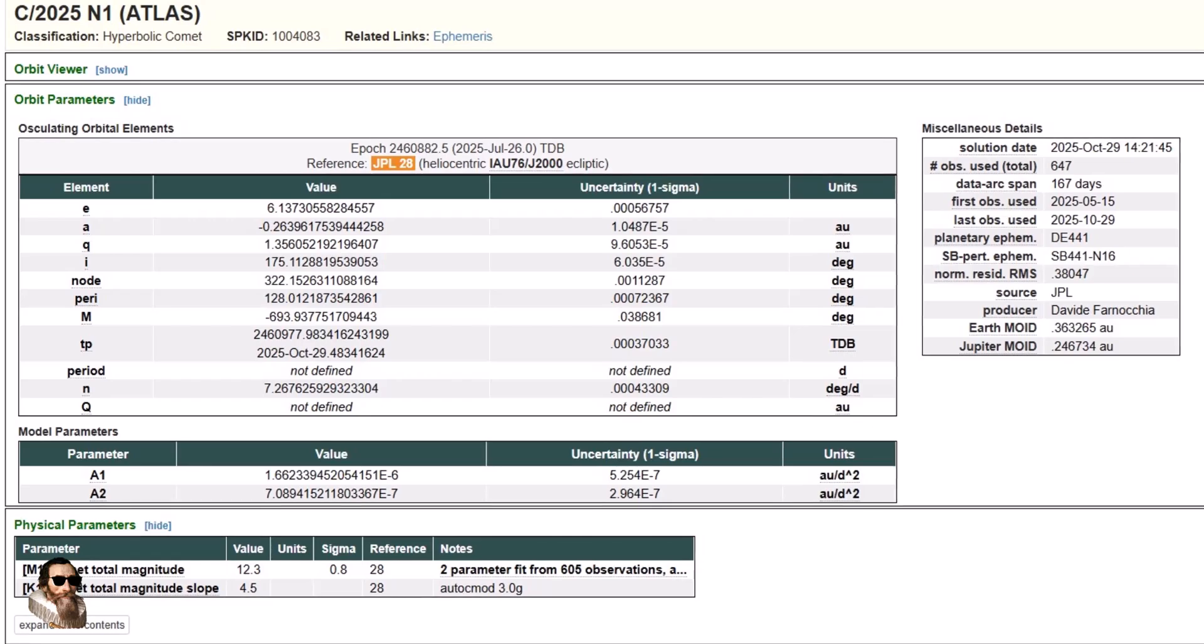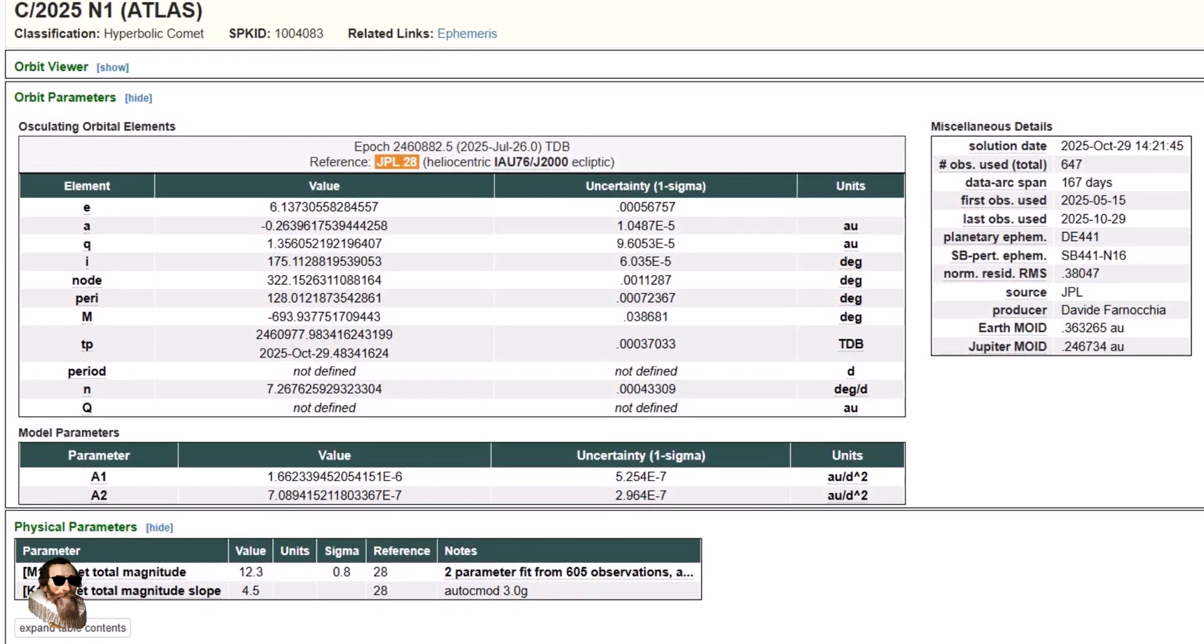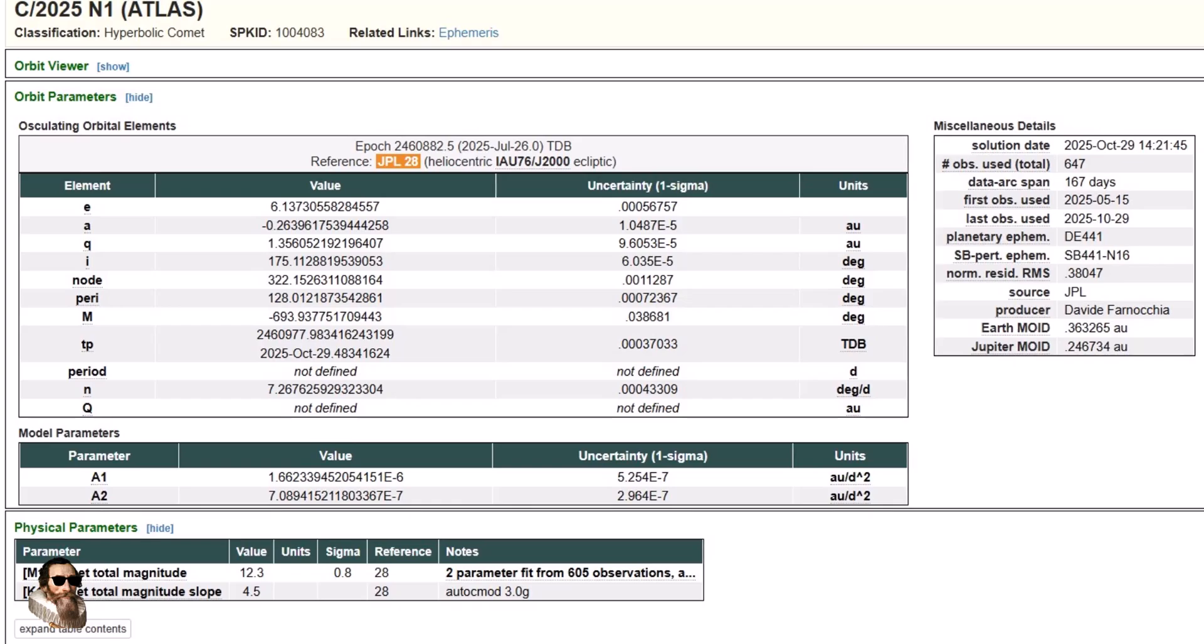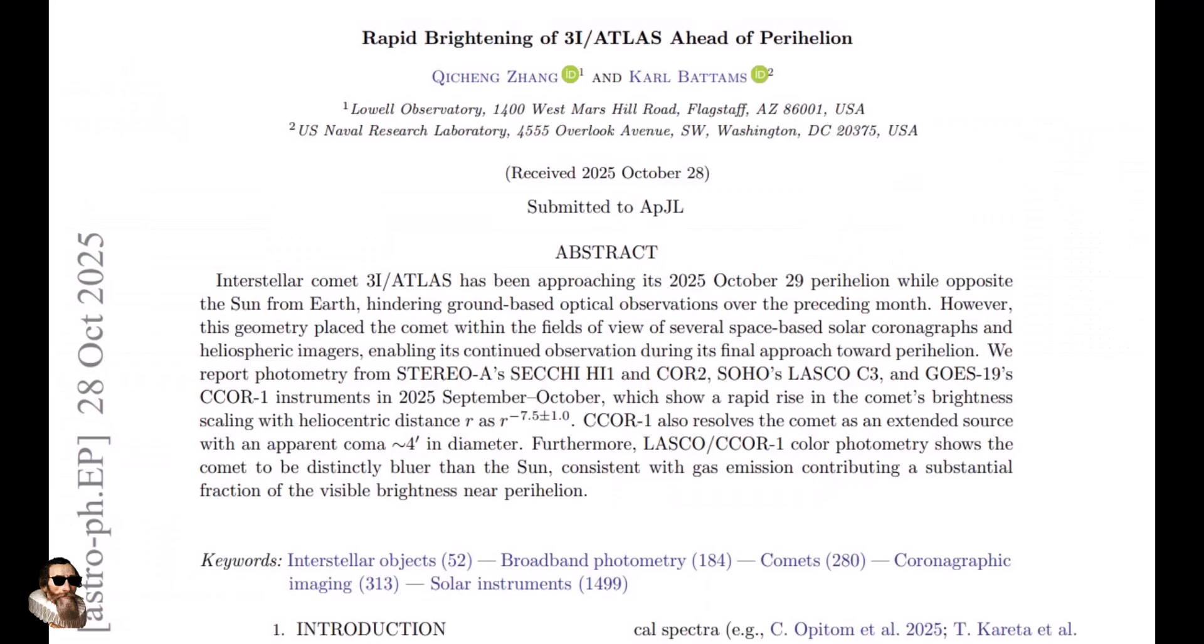Instead of reddening, 3I Atlas appeared bluer than the Sun at perihelion. And this is very surprising. The blue hue could be explained if there were ionized carbon monoxide, or an uncommonly hot surface, or if it had an engine.